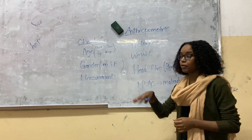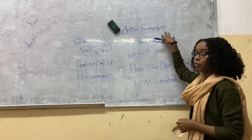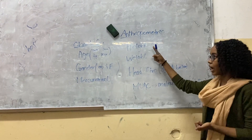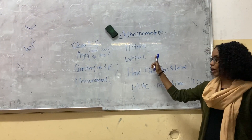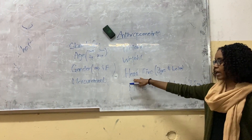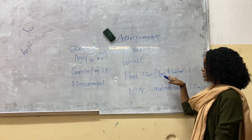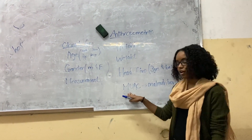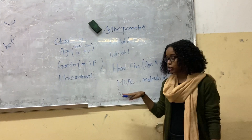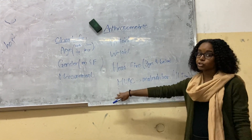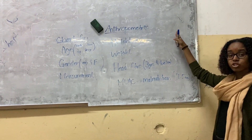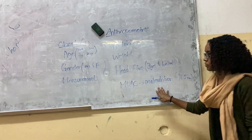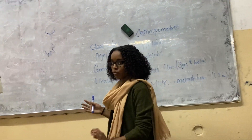Today we're going to be doing the anthropometric measurements. When measuring anthropometric measurements, you have to measure the height, the weight, and head circumference. Head circumference is only done if the patient is three years old or younger. Then there's also the mid-upper arm circumference, but you're only going to measure it if you're assessing anthropometric measurements for malnutrition specifically. So, we're going to do the height and the weight.